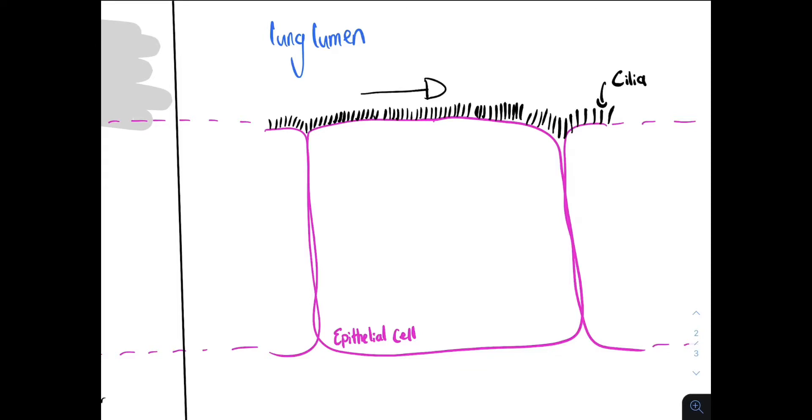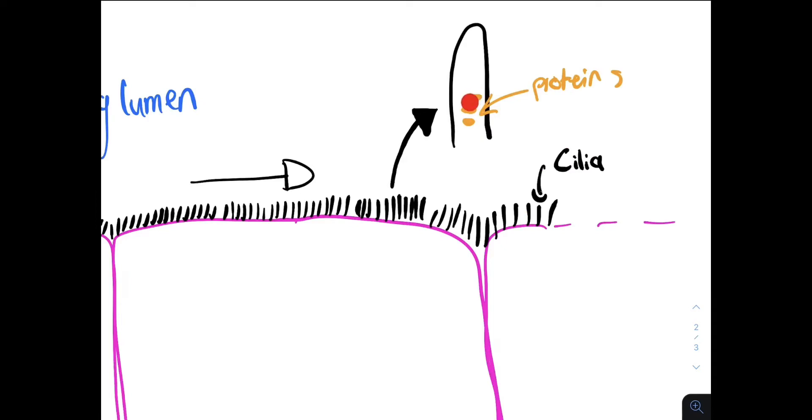This is coordinated by specific proteins within the cilia. So this is a cilia, and these are the specific proteins inside of it. Now in PCD, there is disruption or an abnormality of these proteins.